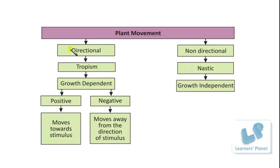The name itself suggests what it actually means. Directional means it is having a particular direction. Now if we consider the movement with respect to the stimulus, the direction should be either towards the stimulus or away from it. So these movements can be directional — on the basis of a particular type of stimulus, the plant can move either towards the stimulus or away from the stimulus.